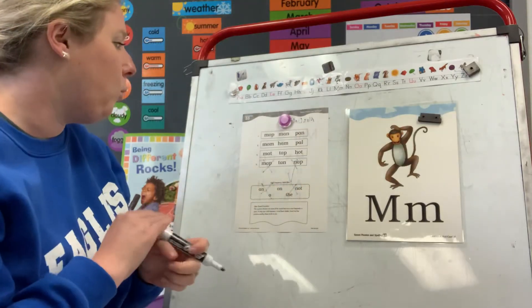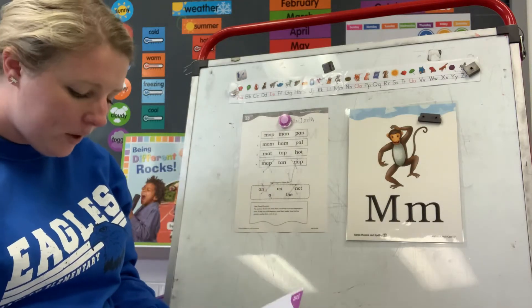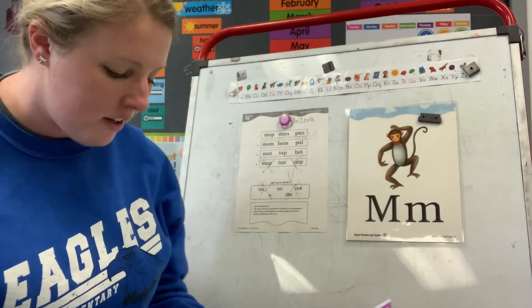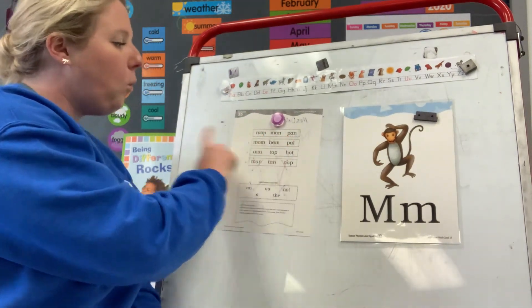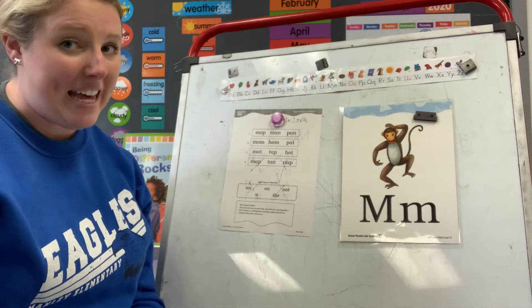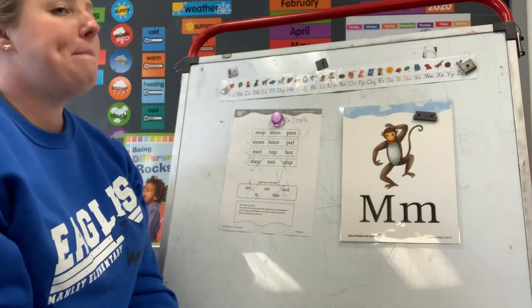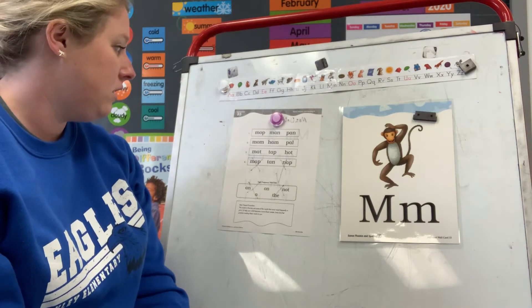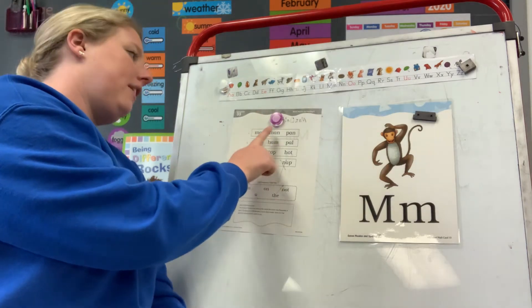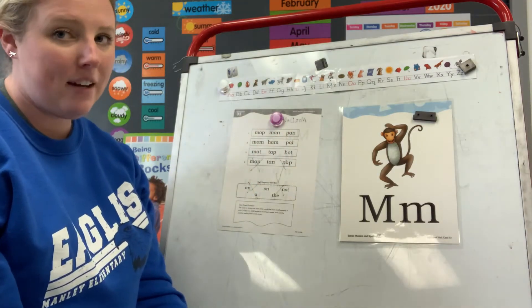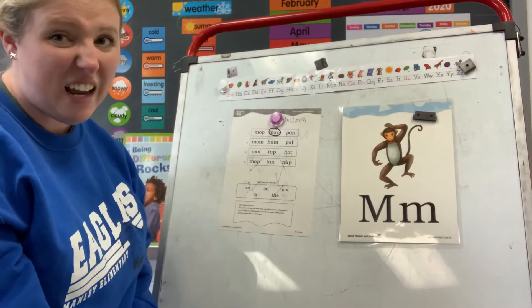Look at number one. I'm going to give you a word and you're going to circle it. So, number one, you have three words. Which one of those words is man? Break those sounds apart and see if you can find the matching letters. M-a-n. Is it the first word, the second word, or the third word, man? The second. So, you should have circled the second word. If you did not, erase it and fix it.